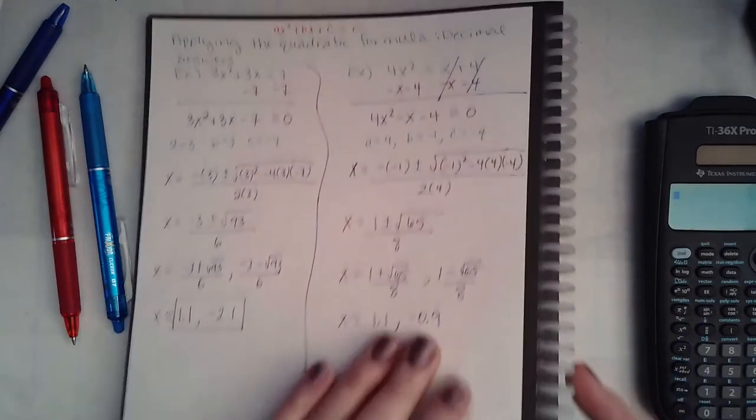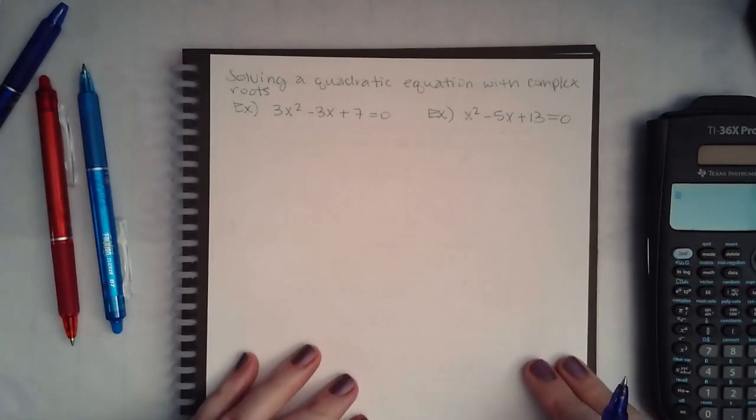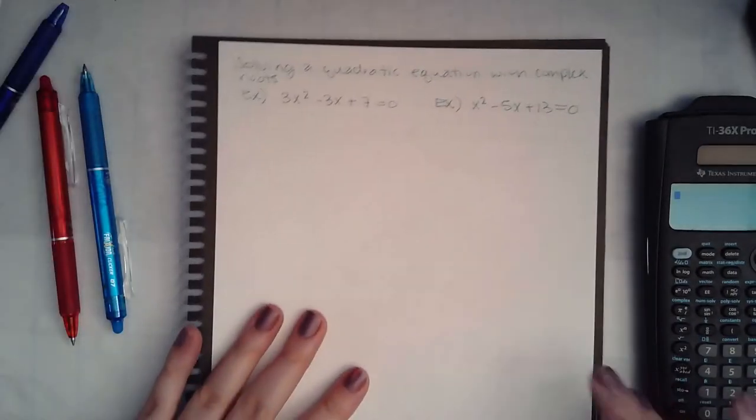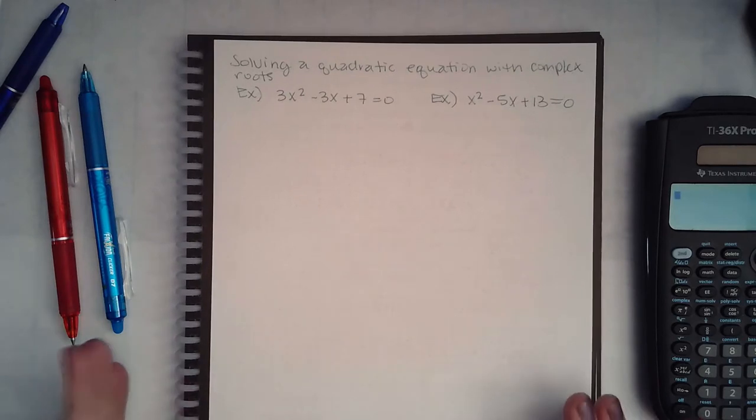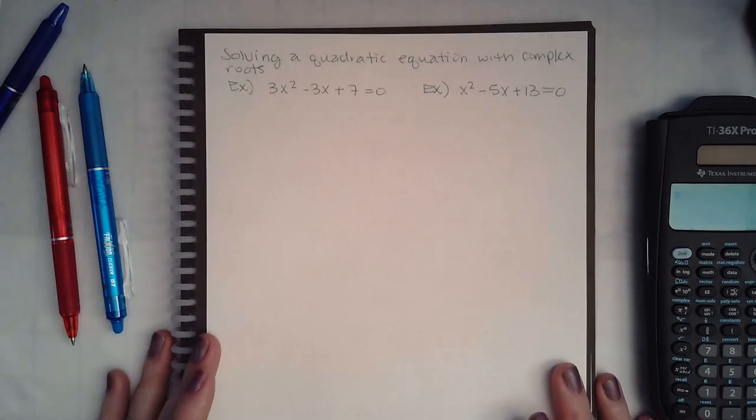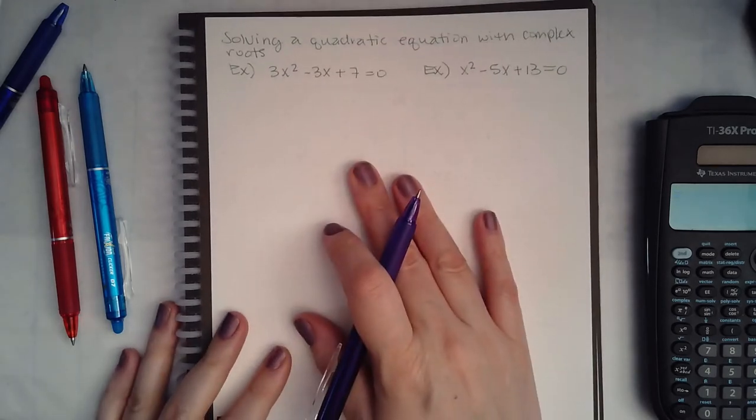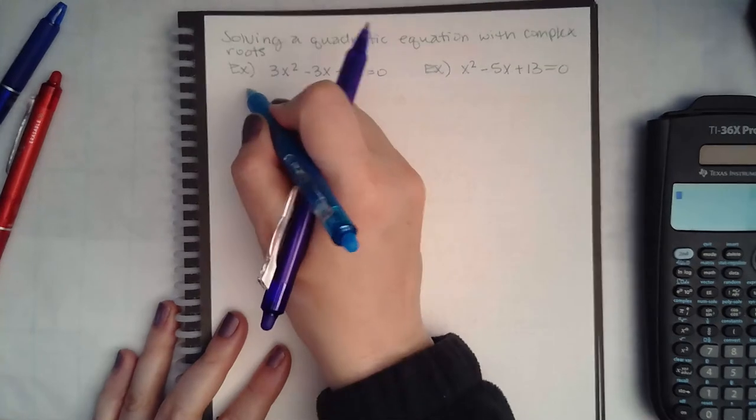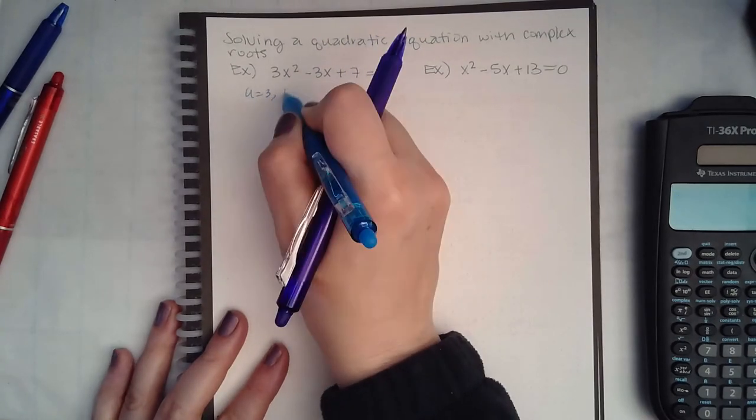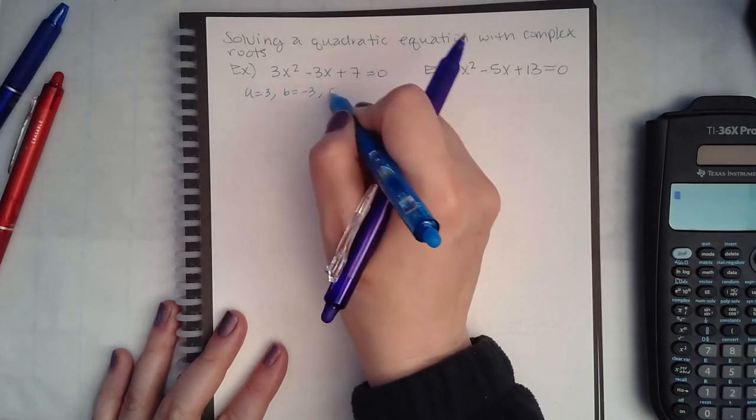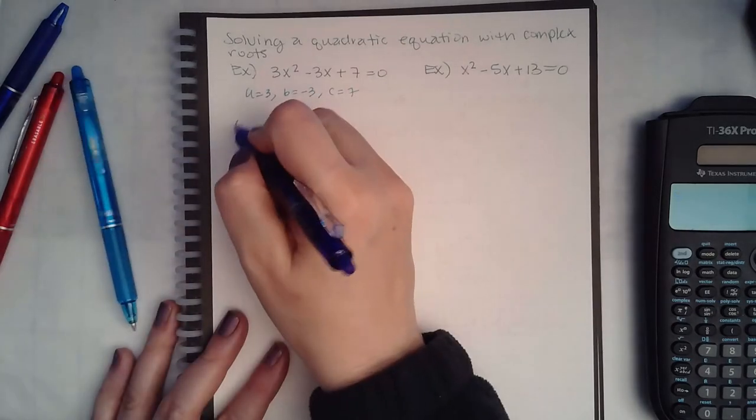Now let's see what happens if we solve an equation using the quadratic formula but it'll have complex roots. So that means when I do the square root part, I might have a negative inside. We're going to do the same thing as before: identify our a, b, and c and plug it into the formula.